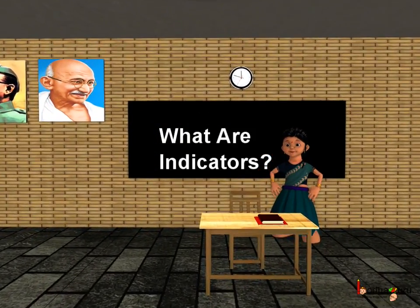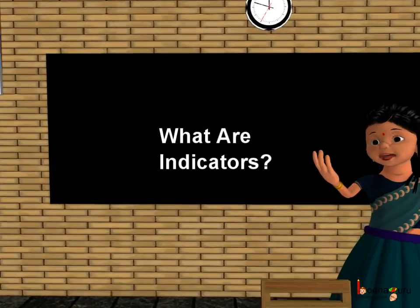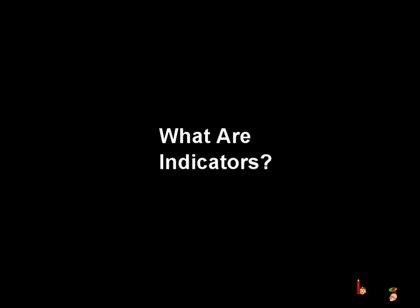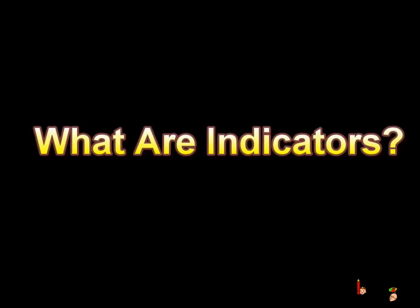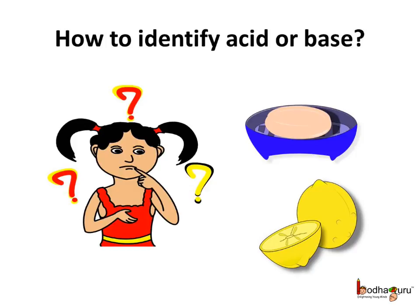Good morning children. Now we know what are acidic, basic and neutral substances. So let us learn about indicators. We know few acids as well as bases are dangerous and can even burn our skin, so we cannot taste all the substances to know whether it is acidic or basic in nature. Then how do we know that a substance is acidic or basic? Let us see.